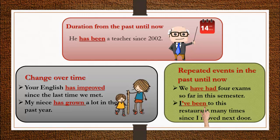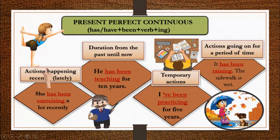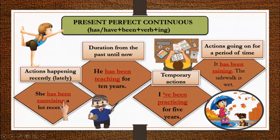Now, present perfect continuous tense. The verb form is: has or have plus been plus verb plus '-ing'. This tense is used for actions happening recently. For example: 'She has been exercising a lot recently' — meaning she has been doing exercise repeatedly over recent times. We use present perfect continuous tense for such situations.